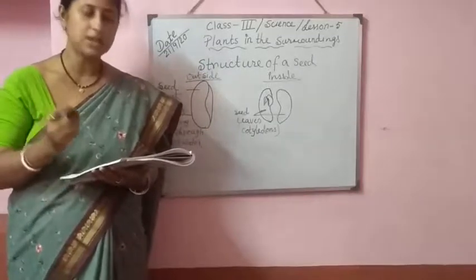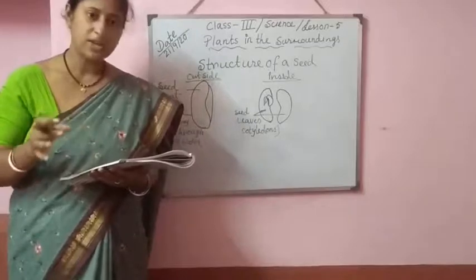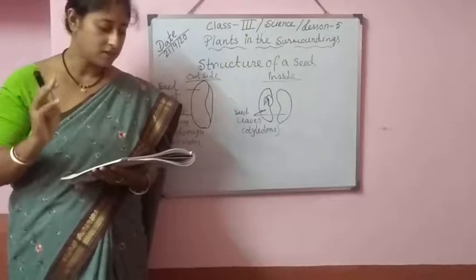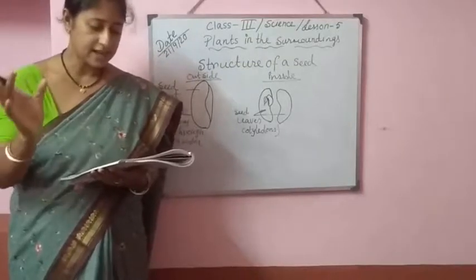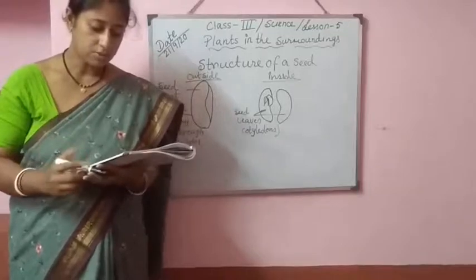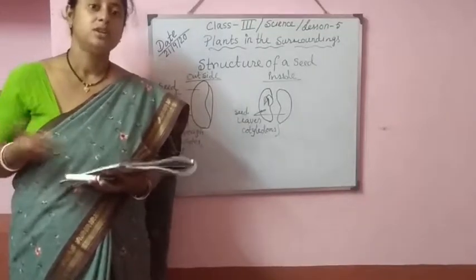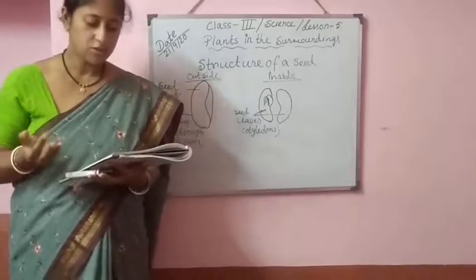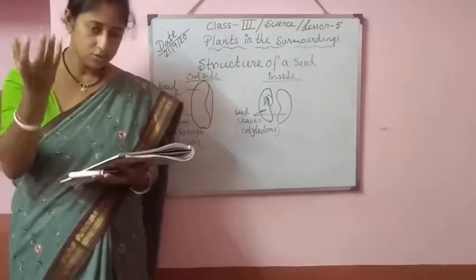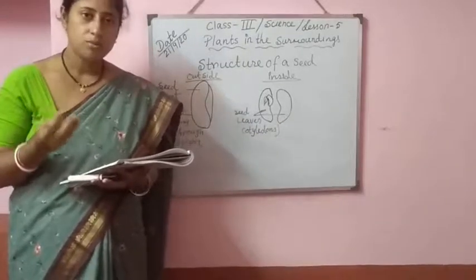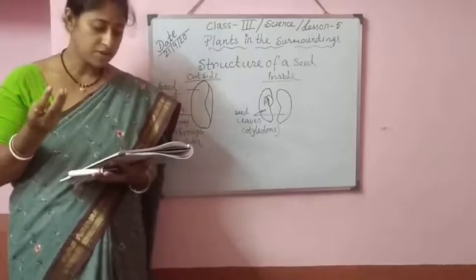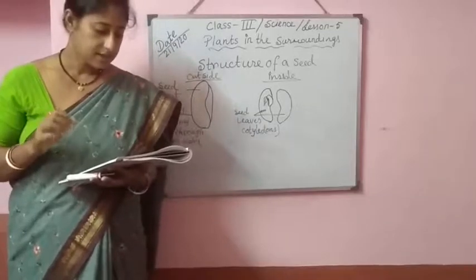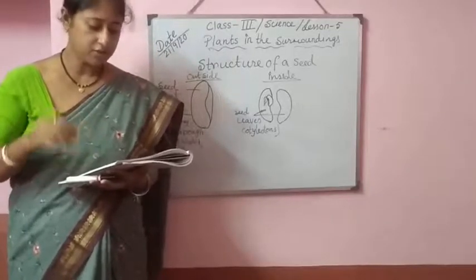A seed requires good quality soil, oxygen, water, warm temperature, and sunlight to grow. That is how the baby plant comes, then the seedling comes. So the seed needs good quality soil, oxygen, warm temperature, water, and sunlight for its growth. Germination takes place in the following steps.